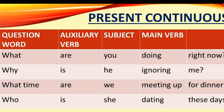To form questions in the present continuous, the auxiliary verb is 'is' or 'are', and the main verb is in the -ing form. For example: What are you doing right now? Why is he ignoring me? What time are we meeting up for dinner? Who is she dating these days?